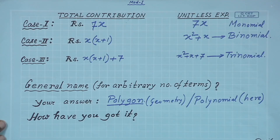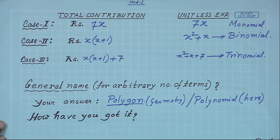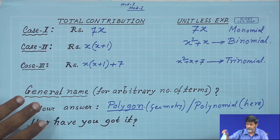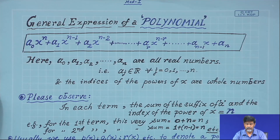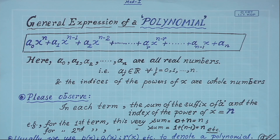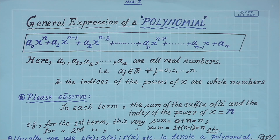In this class we have learned about variable and constant, the general form of a polynomial, the restriction on the values of the powers of the variable, how to check whether a given expression is a polynomial, and reduction of a non-polynomial to a polynomial by variable transformation — though this cannot always be done. Just like polygon is used in geometry for arbitrary number of sides, we use polynomial for arbitrary number of terms. The general expression is a₀xⁿ plus a₁xⁿ⁻¹ and so on up to aₙ.